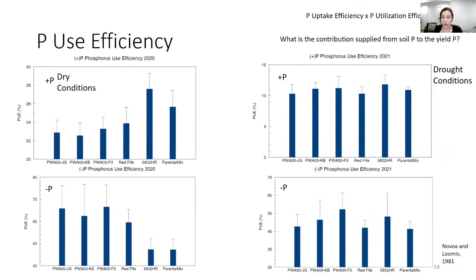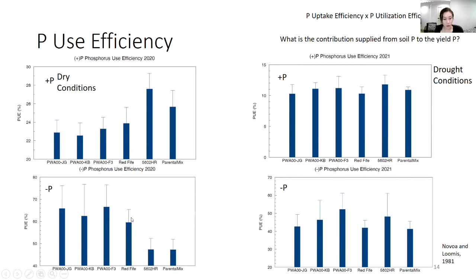This is the phosphorus use efficiency — uptake and utilization combined. In the positive phosphorus, dry conditions treatment, 56-02HR was very efficient with the phosphorus it could take up, much more so than one of the parents and the progeny, showing this modern variety responded more to added manure than the others. However, in the low-phosphorus environments, 56-02HR was not as efficient as the progeny and was more in line with Red Fife. In drought conditions, there wasn't too much difference between the genotypes with manure added, and Red Fife was not as efficient as the others, though it was more in line with PWA00JG.